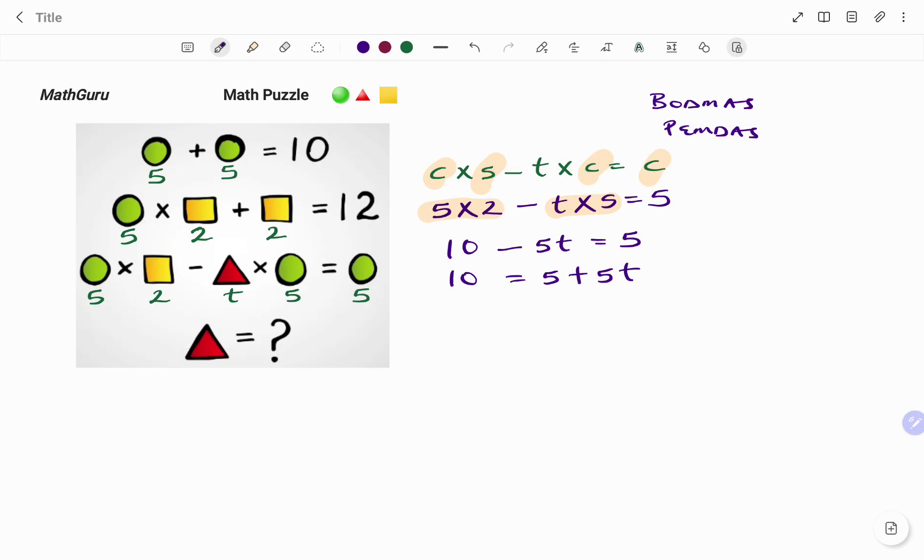And then I'm going to move my 5 to the left hand side, that becomes a minus. So therefore I have 10 minus 5 equals positive 5T. 10 minus 5, that's 5 equals to 5T. And therefore to find the value of T or the triangle, I'll divide both sides by 5. So therefore the value of T or the triangle equals 5 divided by 5, that's 1.